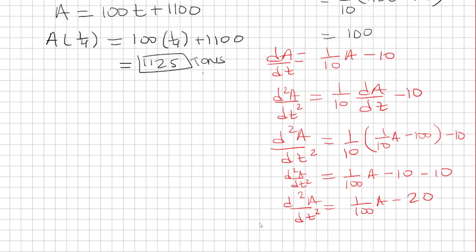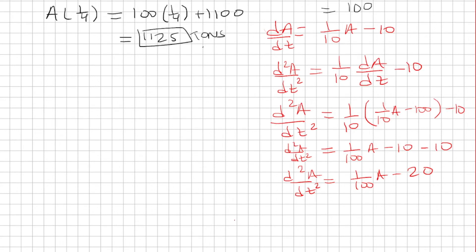So when t is 0, the second derivative is 1 over 100 times A sub 0, which we said A sub 0 was 1,100 minus 20. Well, 1,100 divided by 100 is 11 minus 20 is negative 9. So my second derivative is negative, which means it's concave down.